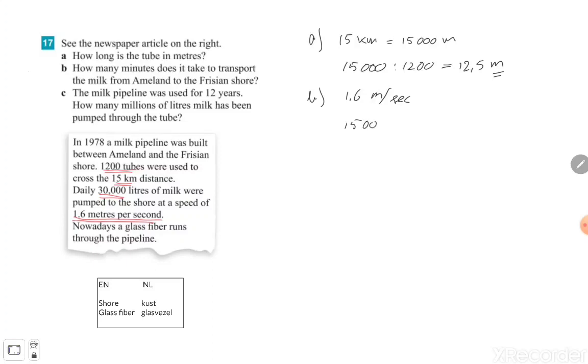So if we know the distance of 50,000 meters and if I divide that one with the speed, 1.6 meters per second, then we know how many seconds it took. So 9,375 seconds. Now if I divide this number by 60, then you get approximately 156 minutes. So to go from seconds to minutes you need to divide it by 60.